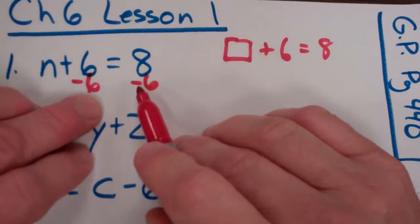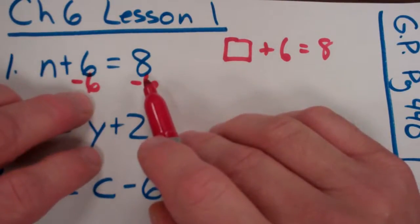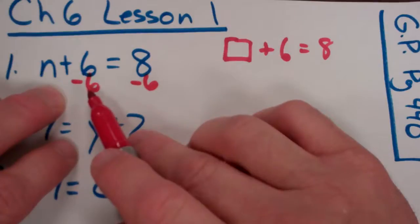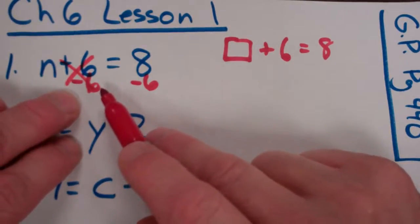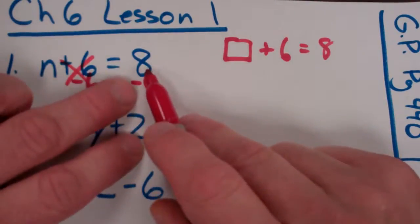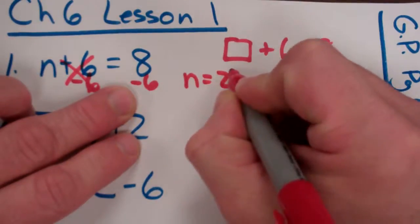Think about it like a scale. As long as you do something to both sides, that same exact thing to both sides, it'll stay balanced. So when I subtract 6 over here, those cancel out. They become an n plus 0, or in other words, it's identity. Over here, 8 minus 6 is 2, so n equals 2.